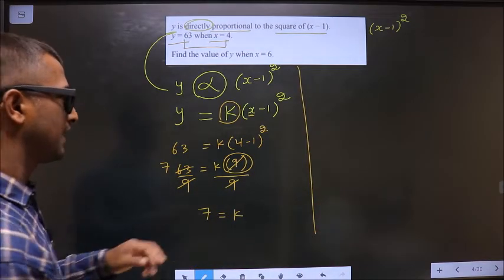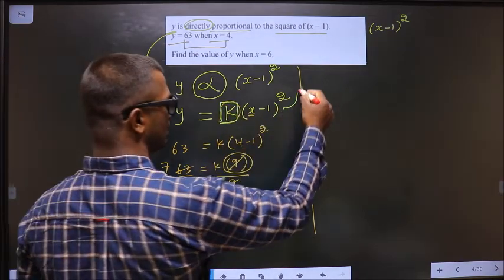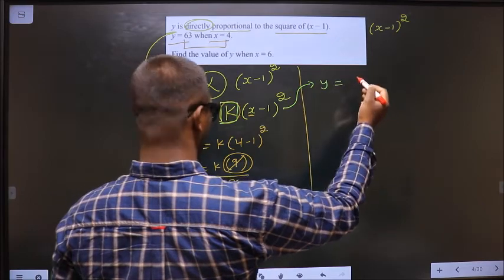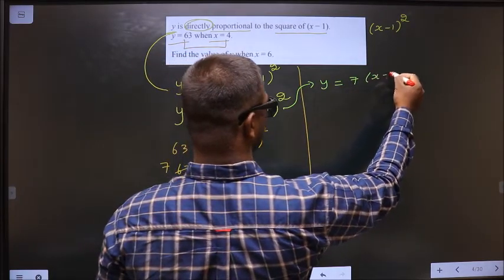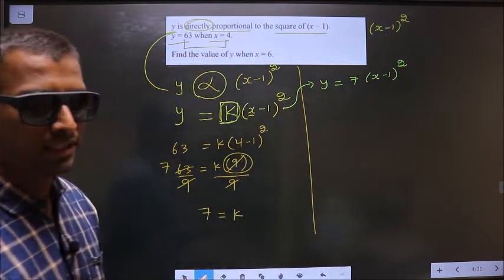Now replace k here. This equation now becomes y equals 7 times (x minus 1) whole squared.